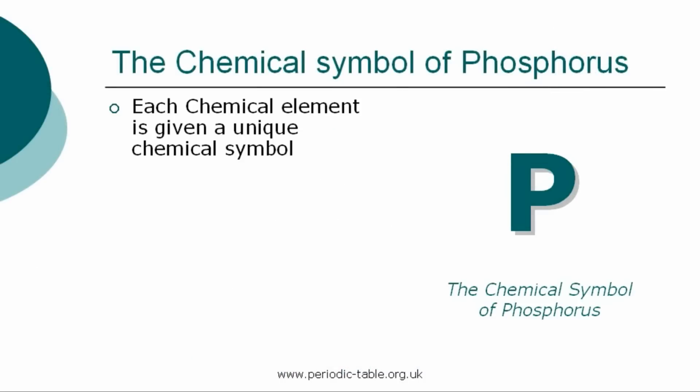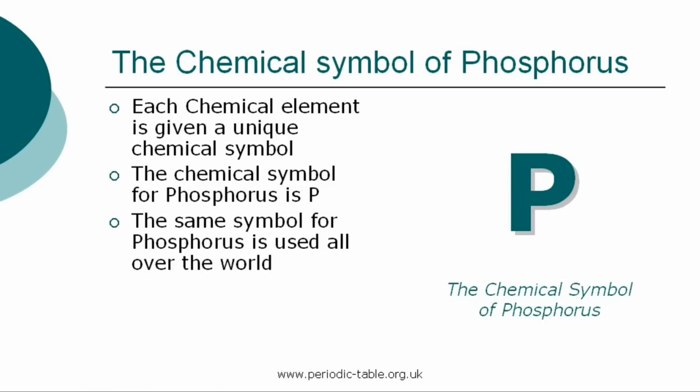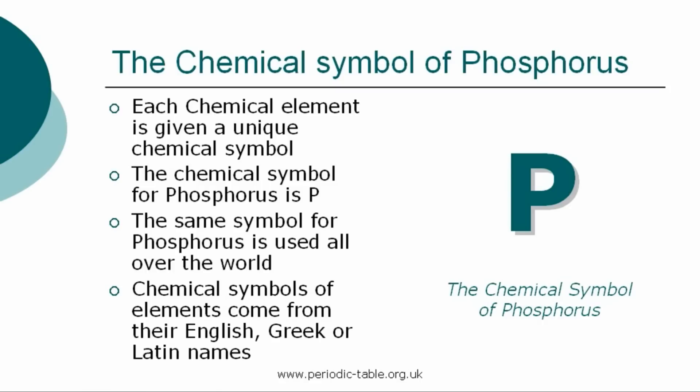Each chemical element is given a unique chemical symbol, which is used all over the world. The chemical symbol for Phosphorus is P. The chemical symbols of elements come from their English, Greek, or Latin names. The first letter of a symbol is always a capital letter, and if there are any subsequent letters, they are expressed in lowercase.